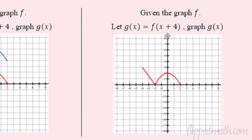What if the number is inside the parentheses? That's what causes the horizontal shift. Some people say it moves right four, but it's always the opposite of what you think horizontally. This is actually a shift to the left, so we shift him left four.